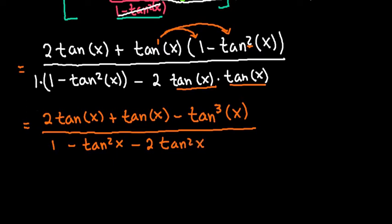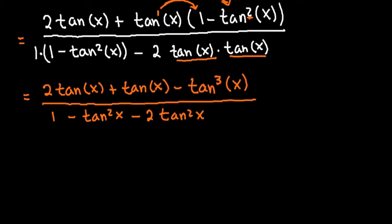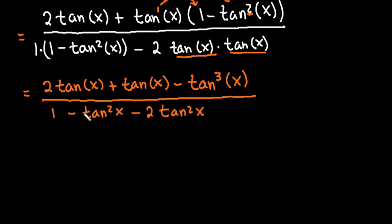We are almost done. I know that this is very complex, and it can be very confusing, especially when you're dealing with tangent. You just have to treat them like you would any variable. So since tangent x and tangent x are considered like terms, if I add these two together, 2 plus 1 would just give me 3 tangent x minus tangent cubed x.